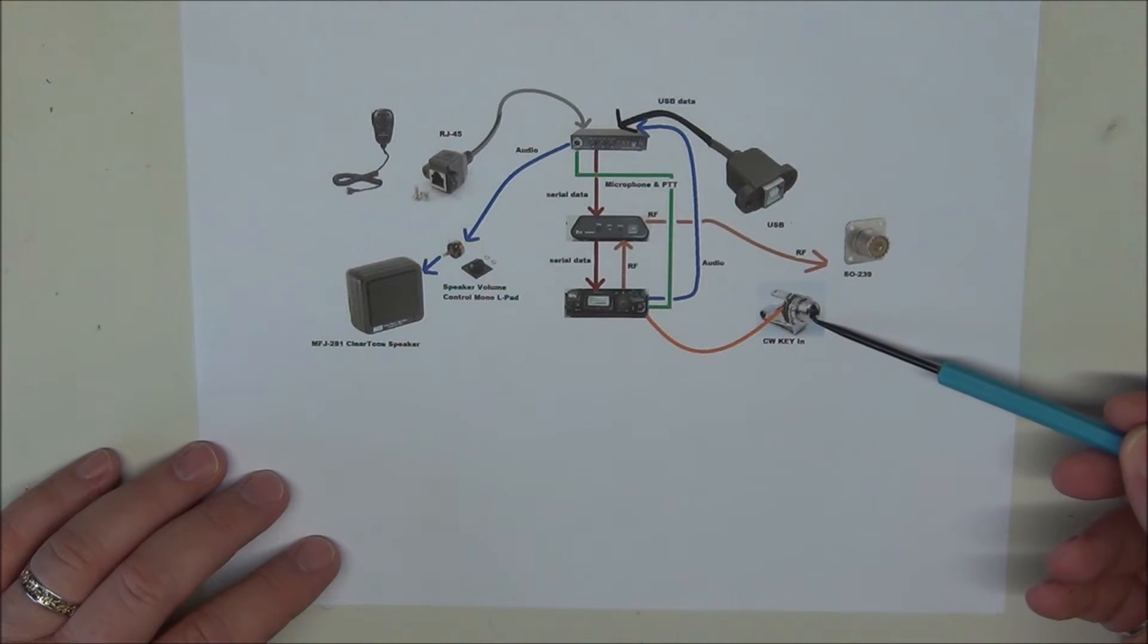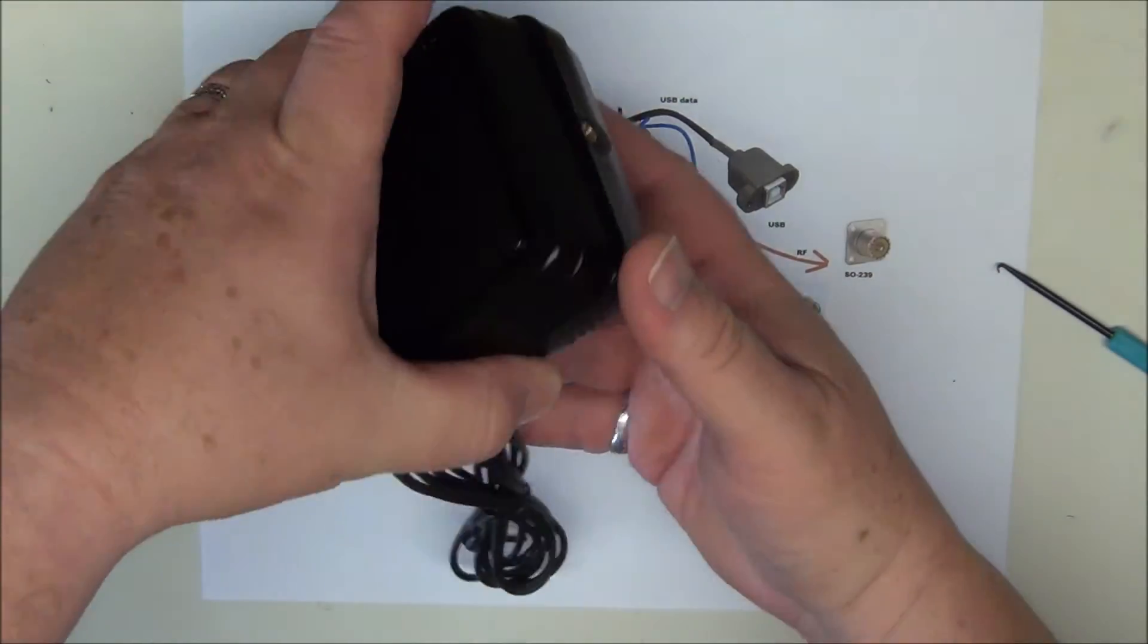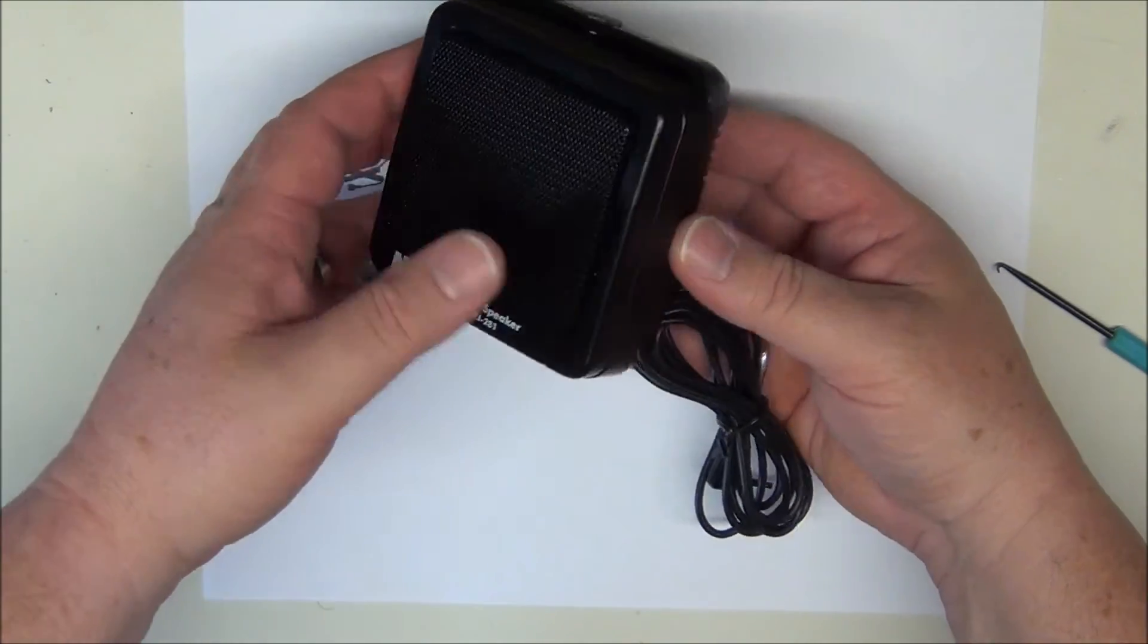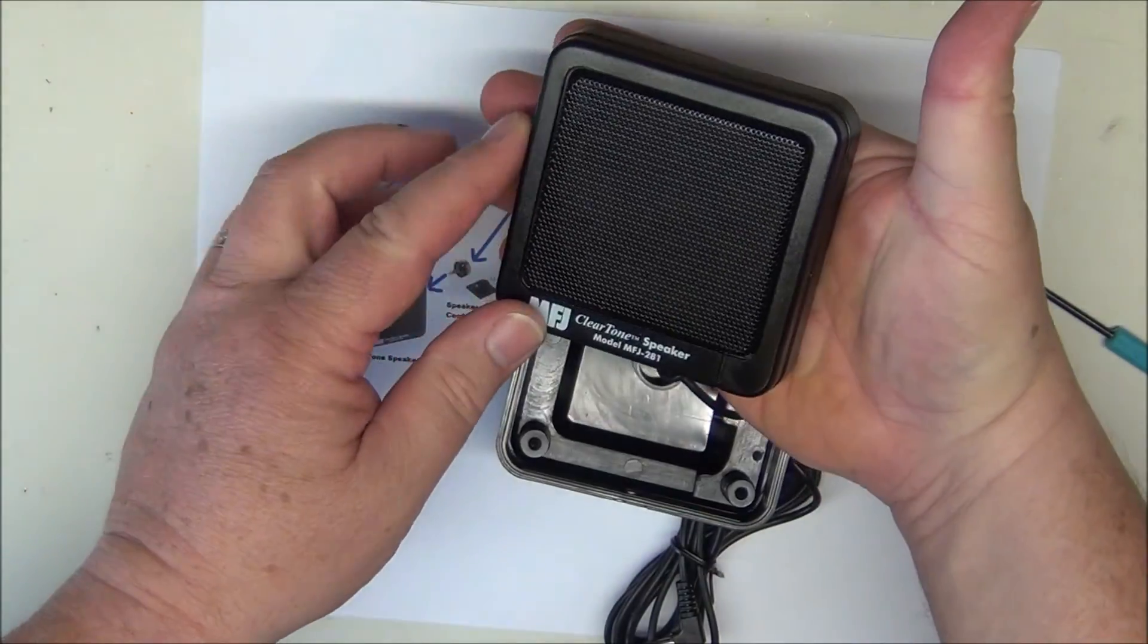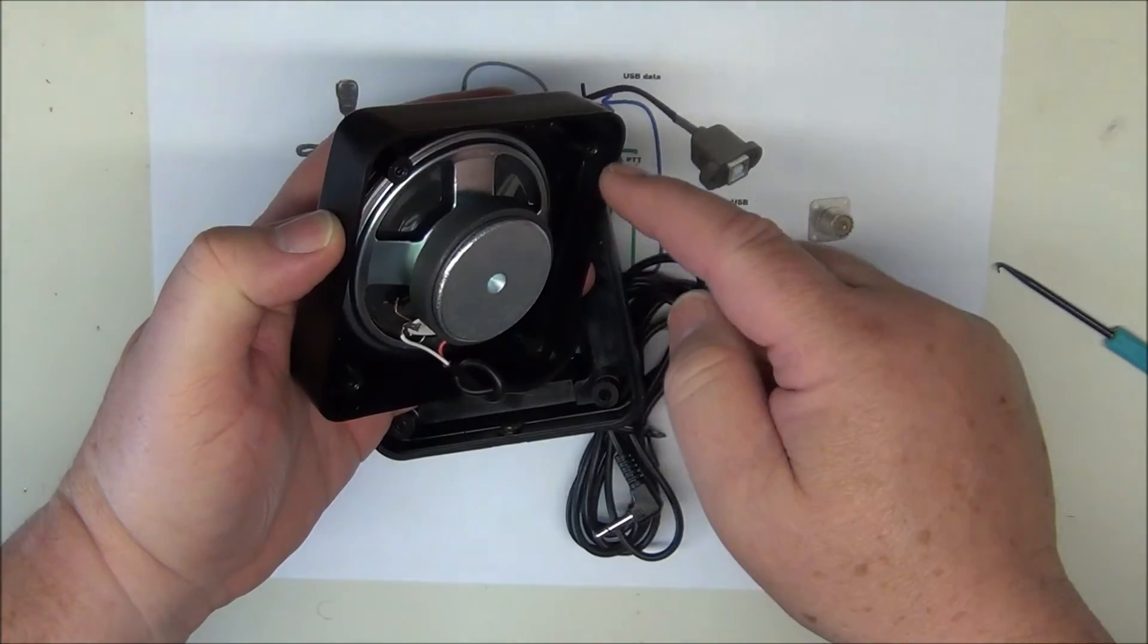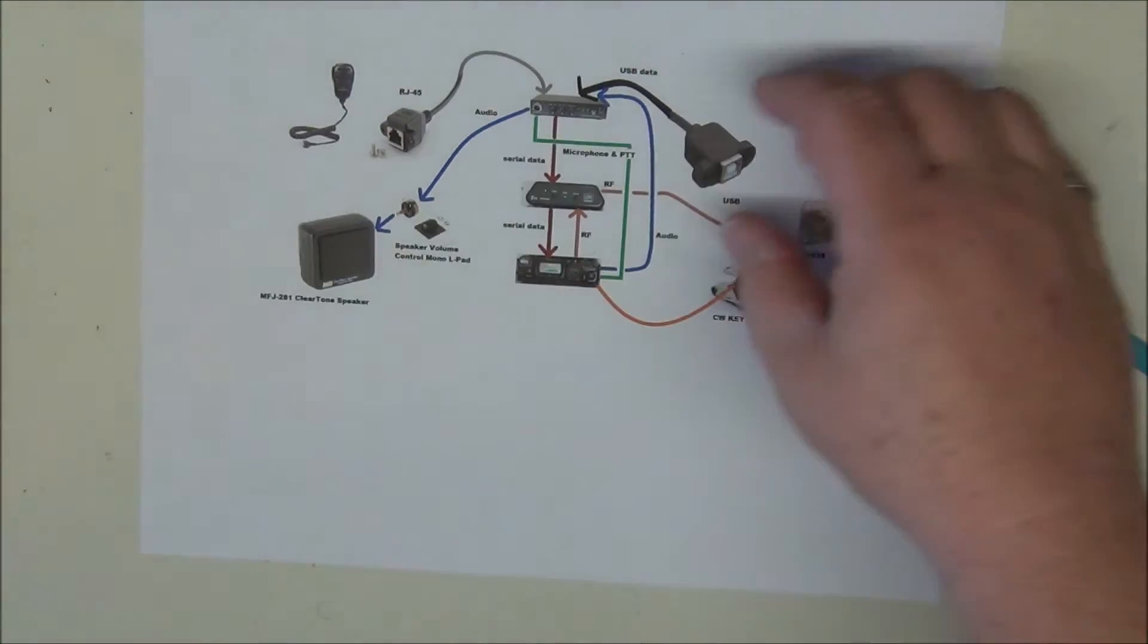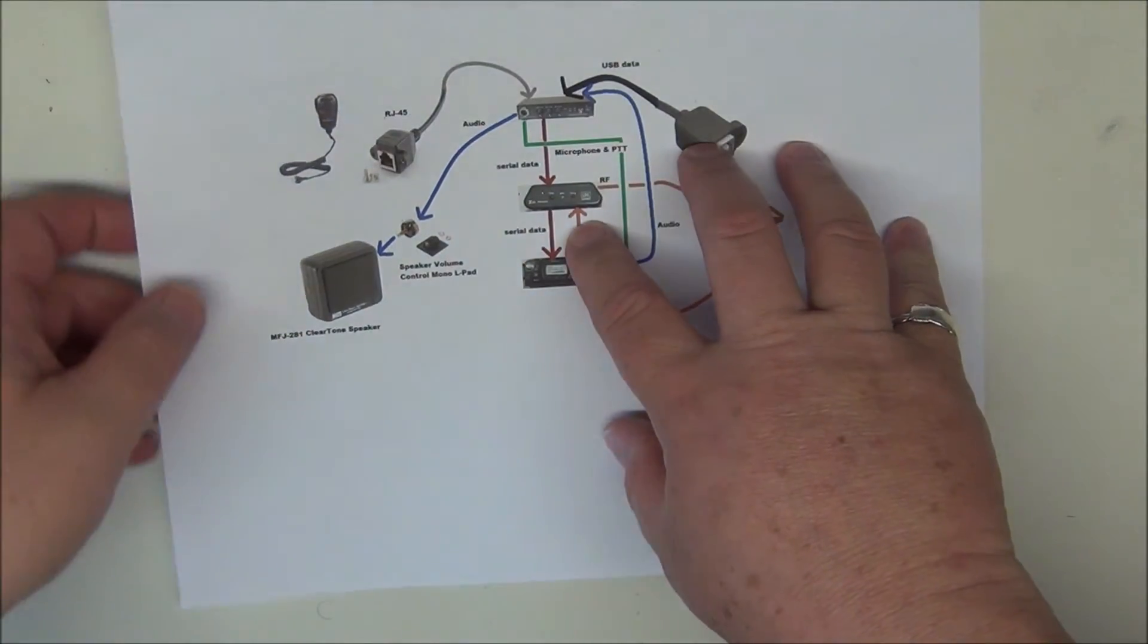We're also going to have a panel mounted jack. This will be a 1/8 inch mono jack for our CW. Now this MFJ speaker, I've purchased an extra one here. These are really good speakers. I have one mounted in my Jeep. What I'm going to do is pull this apart and flush mount this half to the top of the panel. So I won't be using this bottom half. We'll just cut a hole big enough for the speaker and from the bottom screw straight in through the panel. Okay, so that is the transceiver portion of it. But we have to power this gizmo.